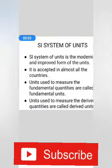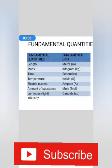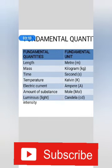The seven fundamental quantities are length, mass, time, temperature, electric current, amount of substance, and luminous intensity. With the help of these seven fundamental units, the units for other derived quantities are obtained.